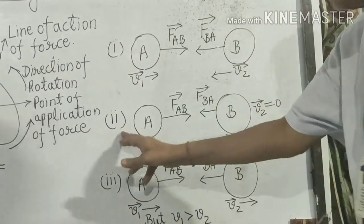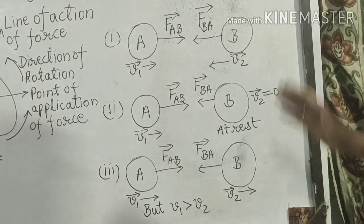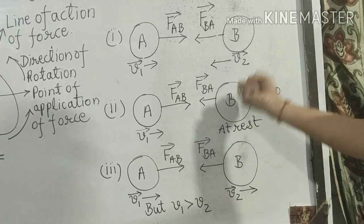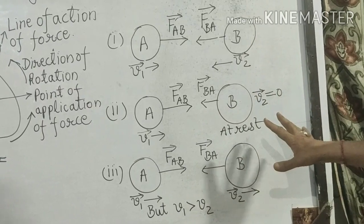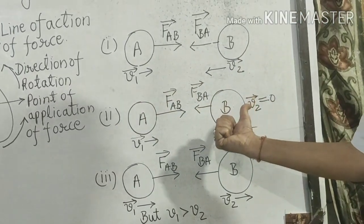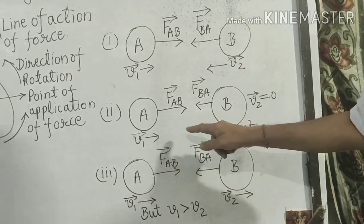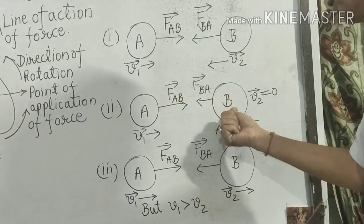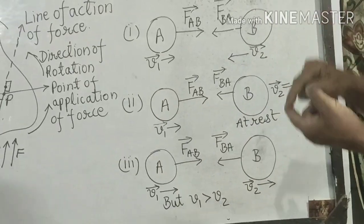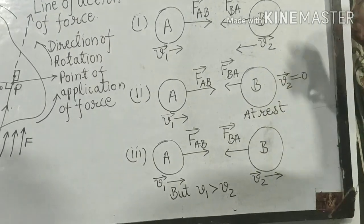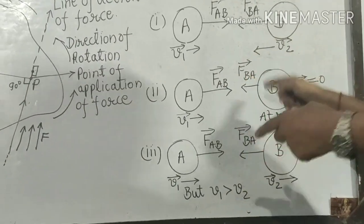This is the second case. Again here two bodies are there — A and B. But here body B is at rest — it is not moving. But A is coming towards B with velocity V1. So A hits B with force FAB. But at the time of hitting, B which is at rest will also exert force on A, which is FBA vector. These forces are also collision forces.